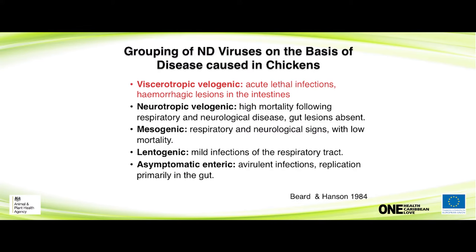The pathogenesis has quite a different spectrum to flu. From the viscerotropic velogenic strains — the acute lethal strains — hemorrhagic lesions in the intestines would be quite normal. You can get a neurotropic presentation with high mortality, respiratory and neurological signs, though gut lesions will be absent with those. Mesogenic viruses are interesting because they will cause mortality, although generally low, and you can see neurological signs, which is relevant for vaccines.